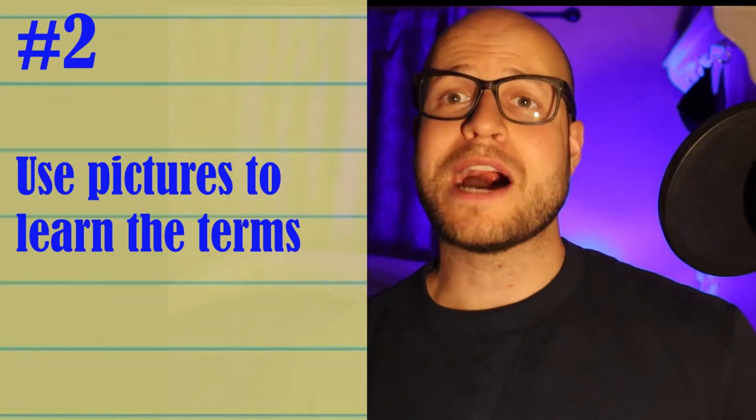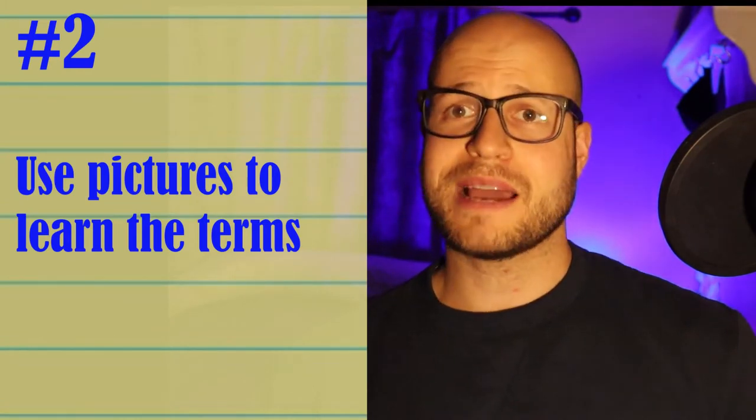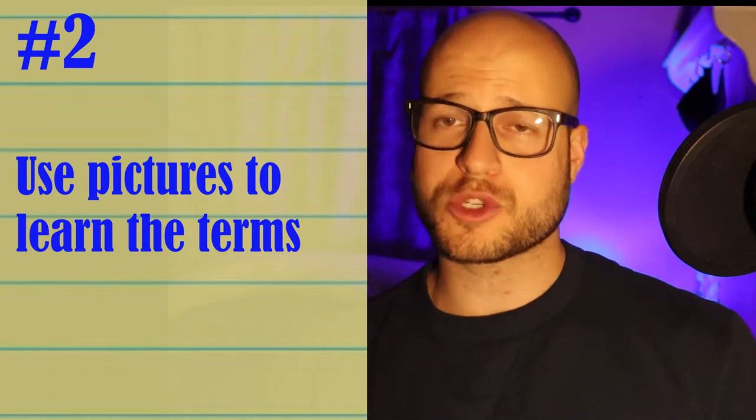Step two. Now that you're comfortable with all the terms — you know what they all look like and sound like — it's time to start associating the terms to the actual body part. This is where you're gonna use your textbook, your PowerPoint slides, or even Google to find good quality images of all the parts that you have to learn. If you're using Google, make sure you use good, reputable sources like university websites, anatomy websites — .orgs, .govs, .edus — things like that. Try to stay away from the .coms if possible.